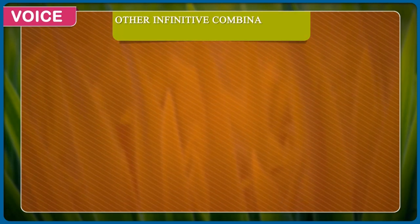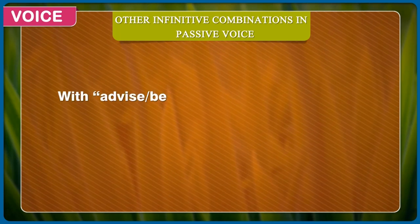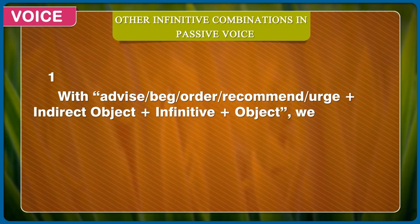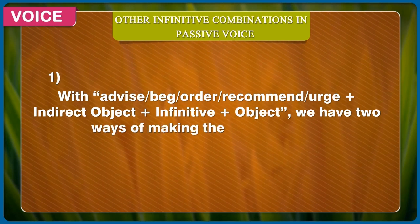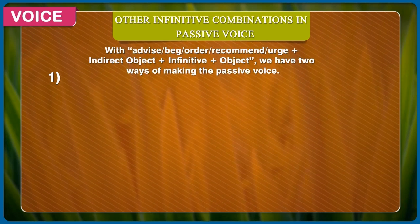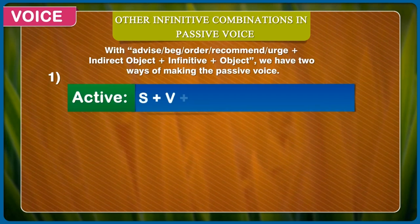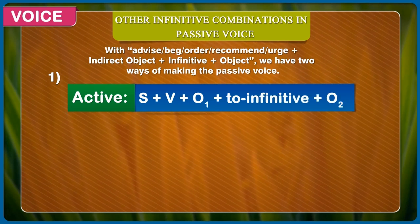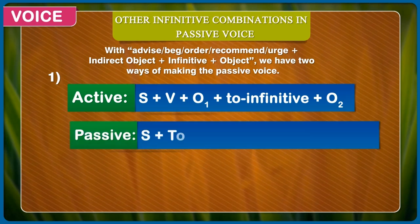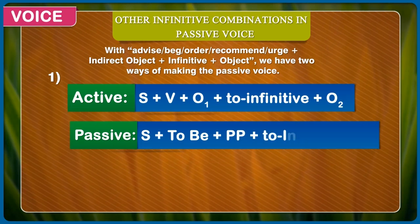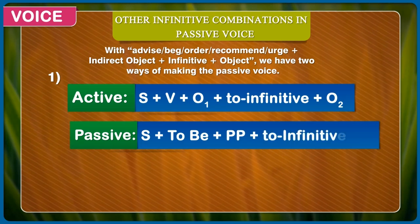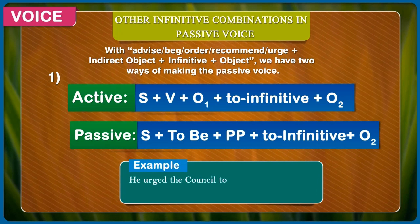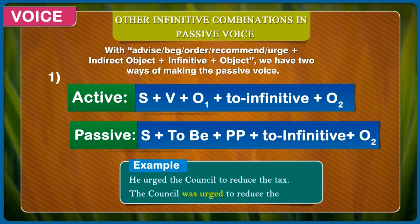Other infinitive combinations in passive voice. With advice, beg, order, recommend, or urge + indirect object + infinitive + object, we have two ways of making the passive voice. First — Active: subject + verb + first object + to infinitive + second object. Passive: subject + to be + past participle + to infinitive + second object. Example: He urged the council to reduce the tax. The council was urged to reduce the tax.